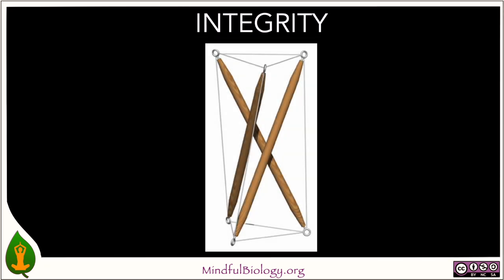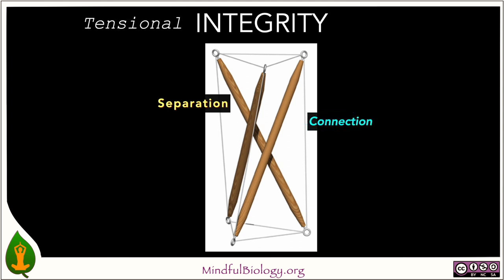Dictionaries define integrity in a couple of ways that I'll deal with in later talks. For today, I want to use a definition that comes from structural design, which refers to something called tensional integrity, sometimes shortened to tensegrity. The idea is that the structure consists of rigid elements — looking rather like pencils — that are separated from one another and connected together only by means of string that passes through the eyelets. The advantage of this construction is that it tolerates deformation quite well without collapse. So there's a very powerful integrity that arises when there's a balance between separation and connection.